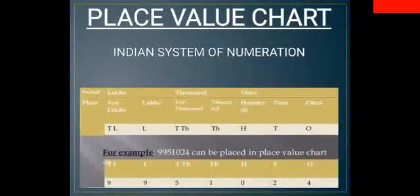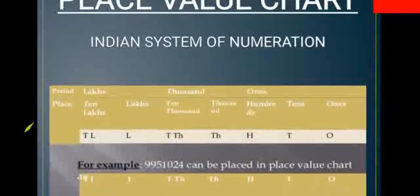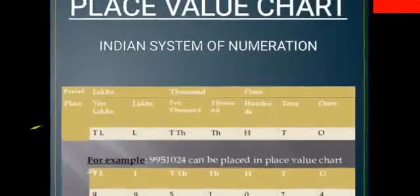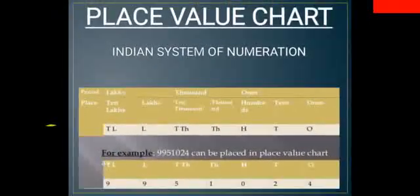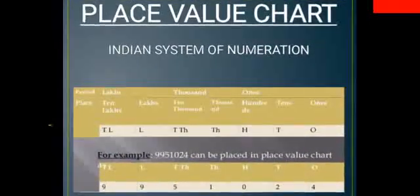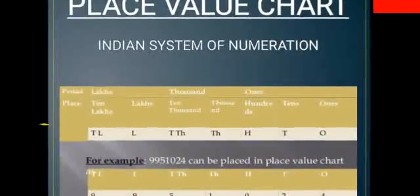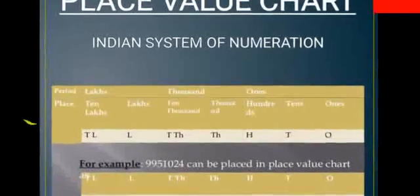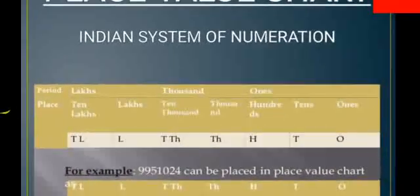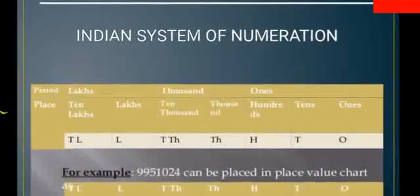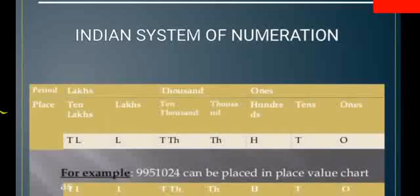Our next topic is place value chart. We are having two systems of numeration: the Indian system of numeration, also called the Hindu-Arabic system, and another system of numeration is the International system of numeration, called the British system. Here we have place value as ones, tens, hundred, thousand, ten thousand, lakhs, ten lakhs, crores and so on.